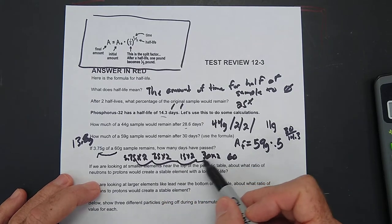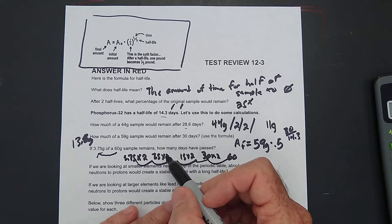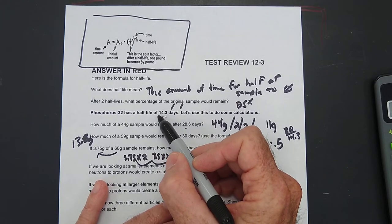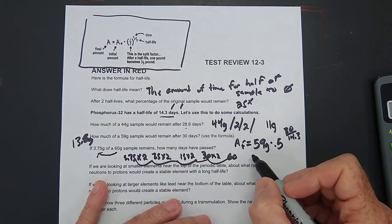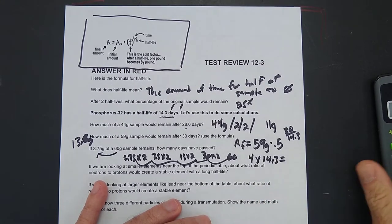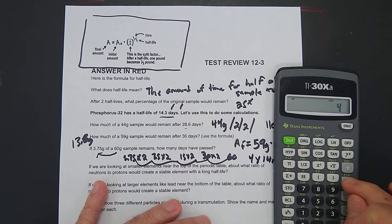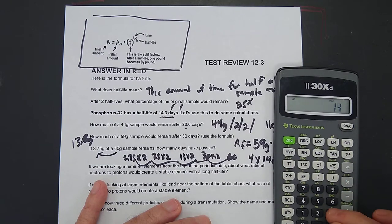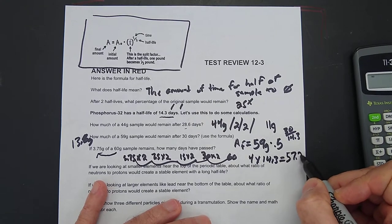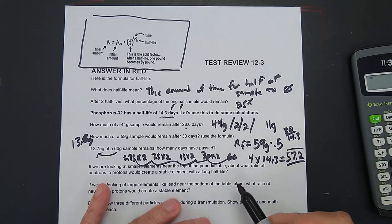1, 2, 3, 4 half-lives. So how many days have passed? 14.3 days is a half-life. So 4 times 14.3 equals 57.2. 57.2 days have passed. All right.